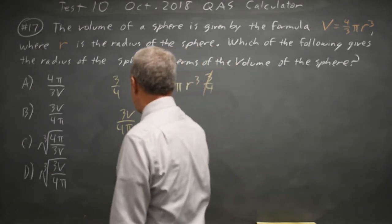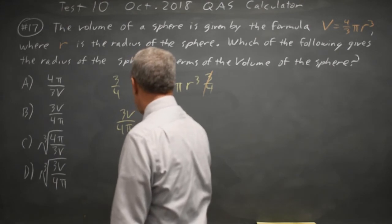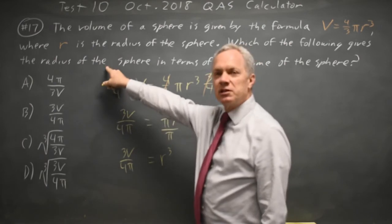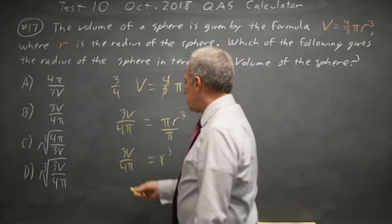So r cubed equals 3v over 4 pi, and that looks like choice B, except that's r cubed, and they're asking for the radius, which is just r. So I have to cube root both sides.